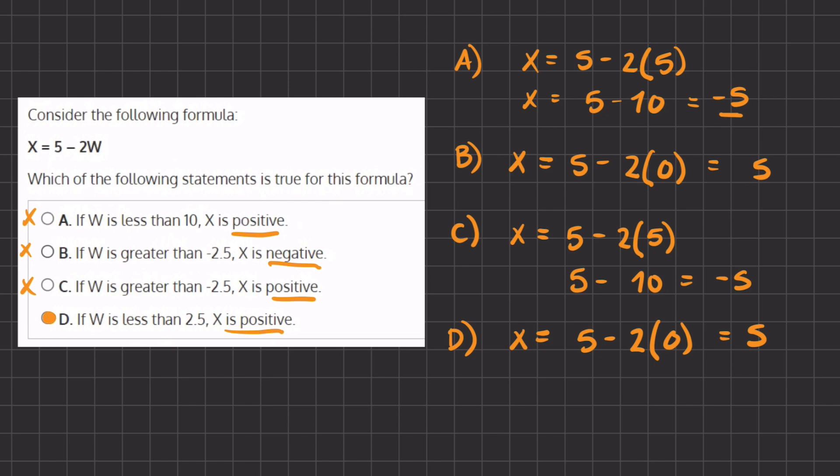And we can also know this and check this because 2.5 times 2 will give us 5. And if we plug in a number that is less than 2.5, then this term will always be less than 5, meaning that X will always be positive.